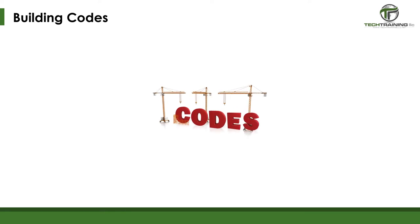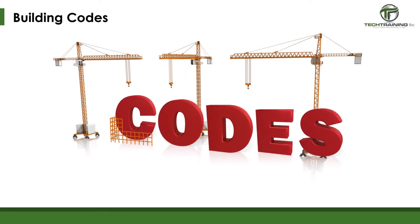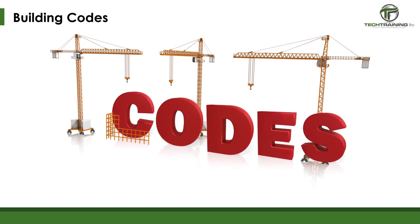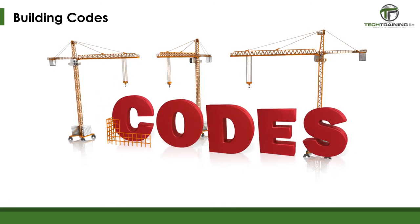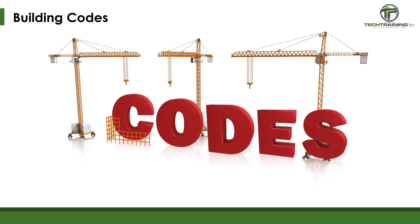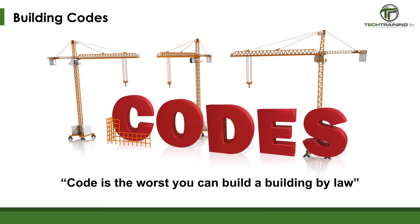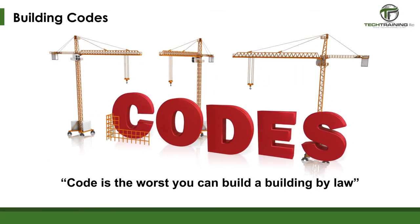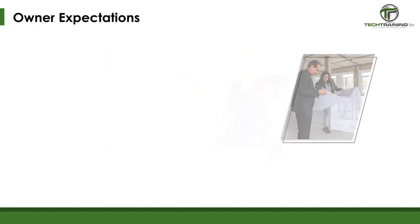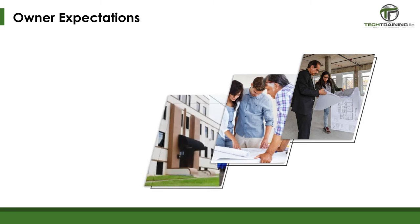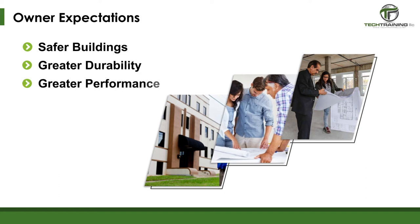A key point is that building codes are the minimum requirements for a building. If you were to build a building strictly to the code, it does not guarantee a high-quality, durable building. The code only seeks to ensure that the building is safe. Someone once said, 'The code is the worst you can build a building by law.' But homeowners, building owners, and occupants expect buildings to be safer, have greater durability, and have greater performance than the building code dictates. Therefore, in many cases, building to the code is simply not enough.